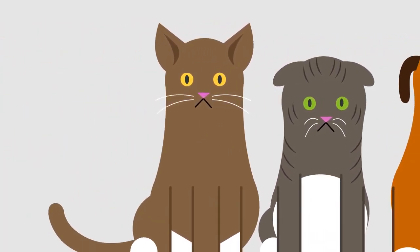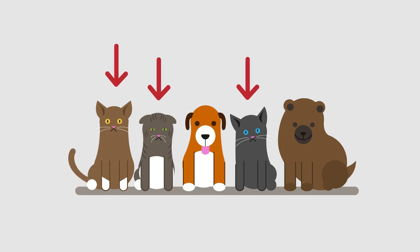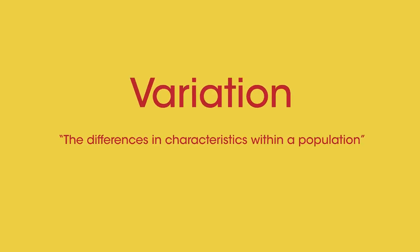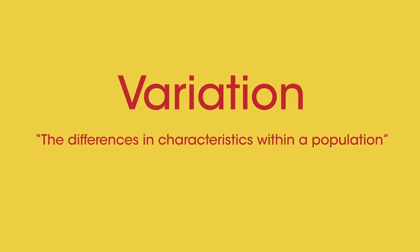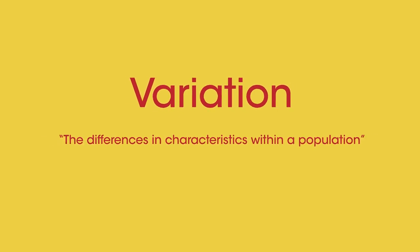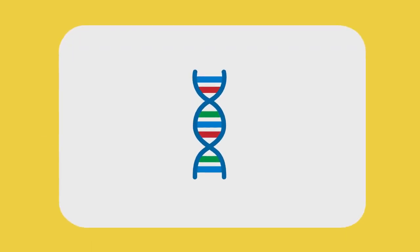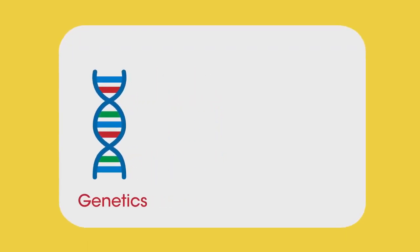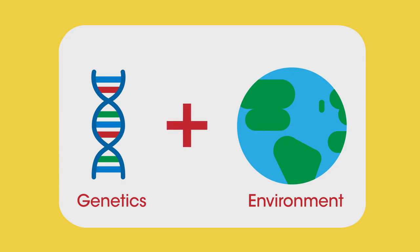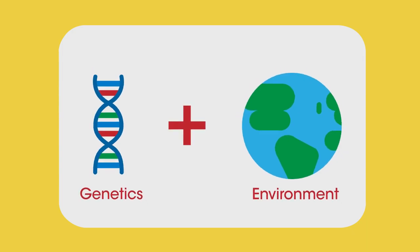They have different color fur and the kittens have different colored eyes. Variation is the differences in the characteristics of individuals in a population. It can be due to genetics, the environment, or a combination of both. Let's start with genetics.